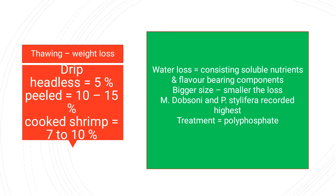Another problem is thawing, which can lead to weight loss. For headless shrimp, thawing weight loss can be five percent. For peeled shrimp it is seven to ten percent, so maximum weight loss occurs in peeled shrimp. This water loss consists of soluble nutrients and flavor-bearing components. In bigger-sized shrimp there will be smaller loss.